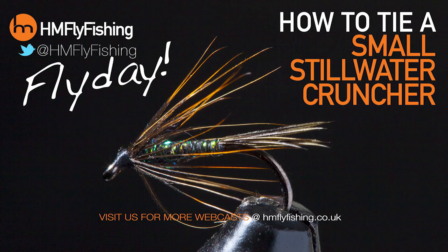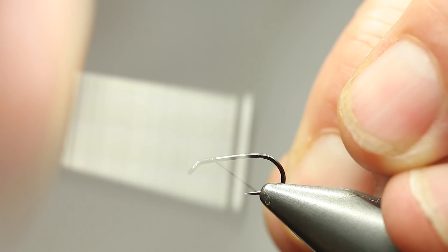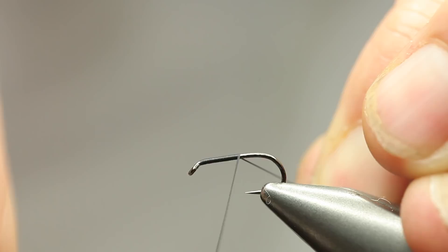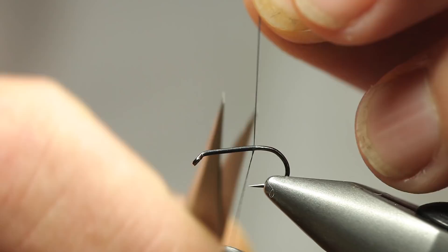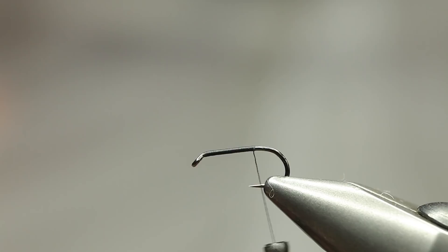It's fly day and today I'm tying a small stillwater cruncher for those really tough days. This pattern is a great small water pattern, size 14-16, especially for heavily fished lakes and if they do a lot of catch and release as well. It's a cruncher with a slight difference, so hackle fibers as tail.